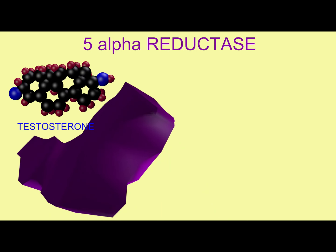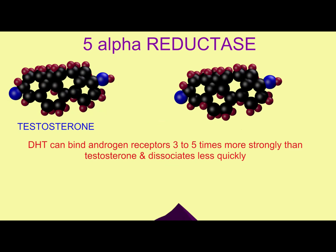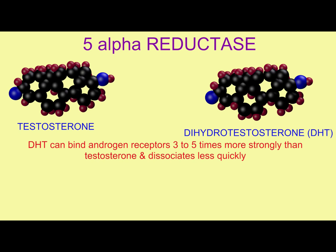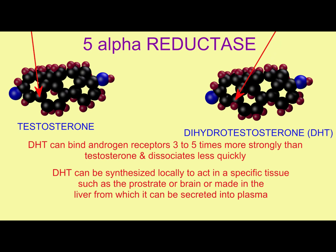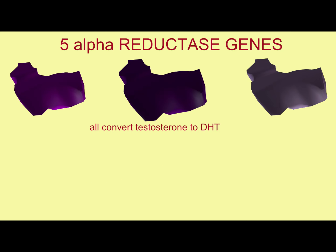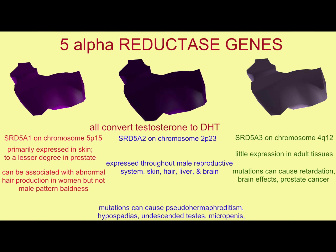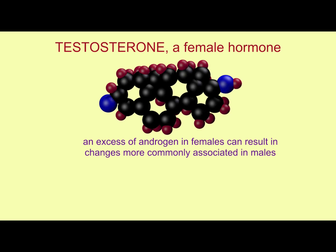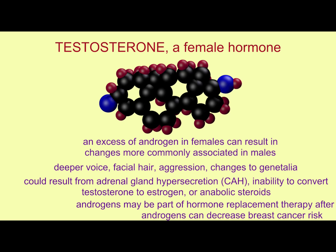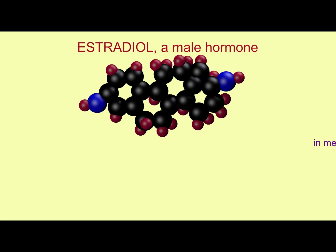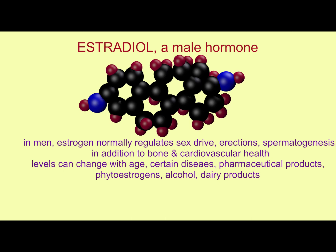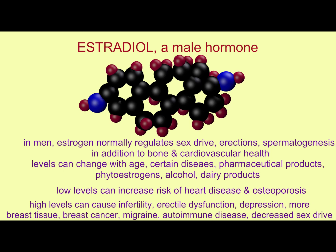Testosterone needs to be converted into one of two active forms, either dihydrotestosterone or estrogen, and mutations or alternate alleles of some of these genes for enzymes involved in steroid pathways have been associated with gender and differences in attraction. To be clear, both men and women make both estrogen — the major one being estradiol — and testosterone, and other adrenal androgens. So these hormones have roles in both males and females.